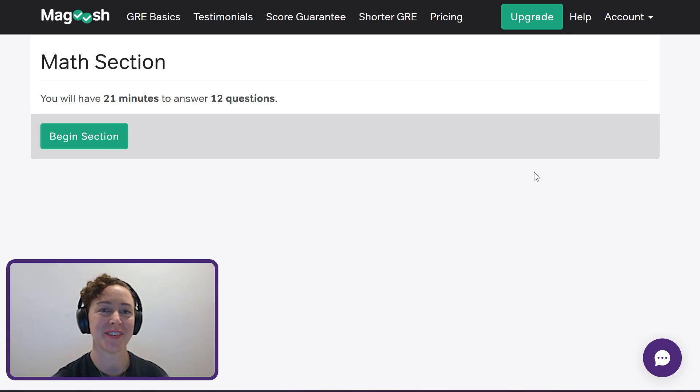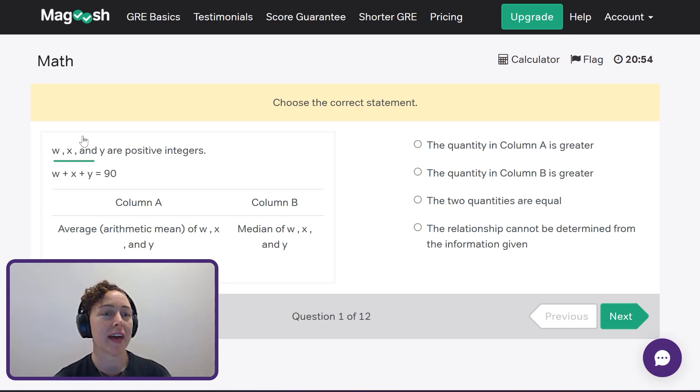When you sit down and you're ready to do this, you're going to see this math section screen. 21 minutes to answer 12 questions. We're not going to do all 12 questions. We're going to do a few questions just to give you an idea of how I would attack this and also what it looks like when you're ready to attack it. Let's begin. Our first question is a quantitative comparison. We've got w, x, and y are positive integers, w plus x plus y equals 90.